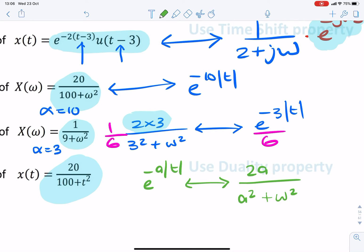So using duality, we can say that 2a over a squared plus t squared should correspond to 2pi e to the minus a omega. Okay? So that's duality.